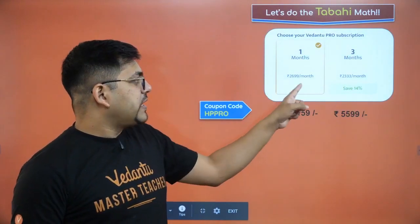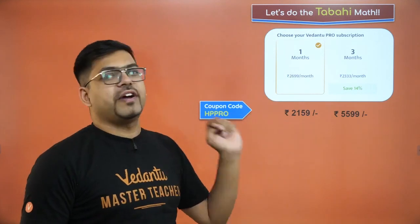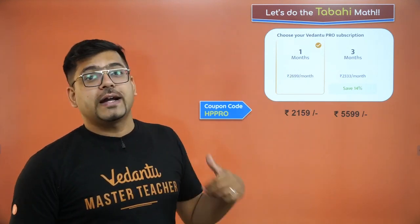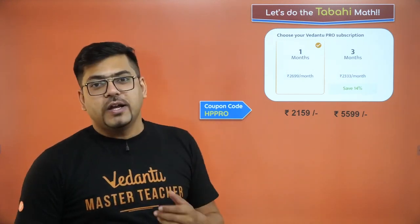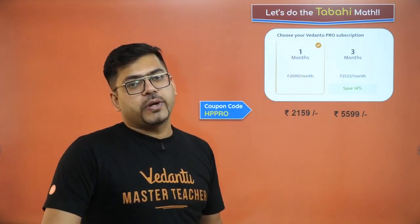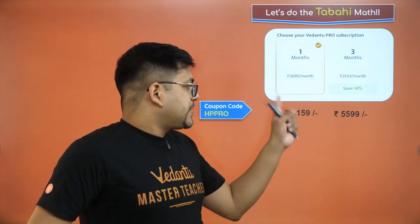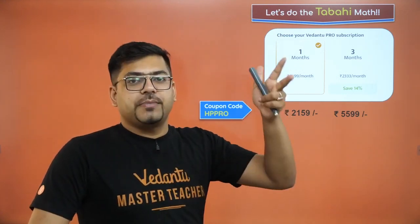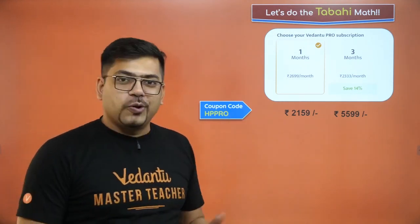Yeh coupon code se 2700 rupees per month ka course jo dikhara hoga woh kam hokar 2159 ho jayega. Toh yeh coupon code aapko har jagah discount dilaane mein madad dega. Thik hai, to apply this coupon code HP PRO — you will be able to get the course at a lesser price. Aur is 2159 mein maths, physics, chemistry, biology, social science, English — sare subjects hain for one month. So those who are liking it, they can enroll themselves.